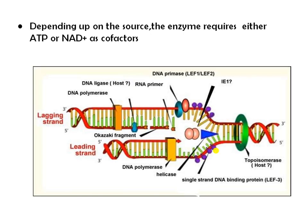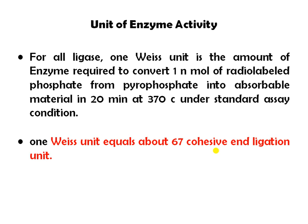Depending on the source of the enzyme, either ATP or NAD is used as the cofactor for the joining purpose. For the unit of enzyme activity, one Weiss unit is the amount of enzyme required to convert one mole of radiolabeled phosphate from pyrophosphate into absorbable material in 20 minutes at 37 degrees centigrade under standard assay conditions. One Weiss unit is equal to about 67 cohesive end ligation units.